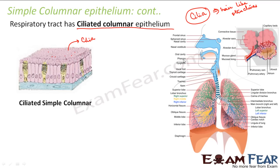How does ciliated columnar epithelium help in the respiratory tract? When we breathe in and out, there is a slippery fluid-like substance secreted by some specialized glands — that fluid is known as mucus. Sometimes when you catch cold, a fluid-like substance starts flowing through your nose — that is the mucus secreted by specialized glands inside the respiratory tract. This fluid-like structure is known as mucus.